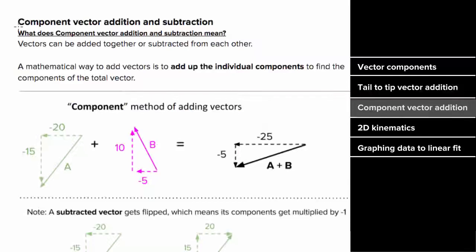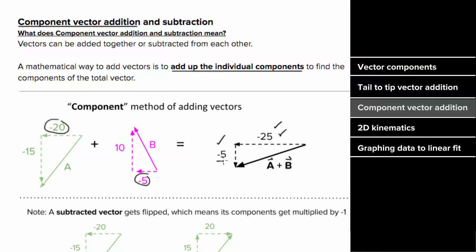Another more mathematical way of adding vectors is by simply adding up their individual components. So to find the total vector a plus b, instead of graphing them tail to tip, you can find the horizontal and vertical components separately by adding up the individual components. In other words, to get the total horizontal component of the total vector a plus b, I can just add the horizontal component of a, which is negative 20, and the horizontal component of b, which is negative five, to get negative 25. And to find the total vertical component, I add the vertical component of a, which is negative 15, to the vertical component of b, which is 10, to get negative five. This technique lets you quickly determine the individual components of that total vector.